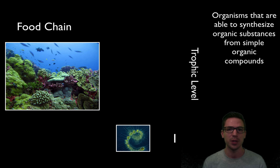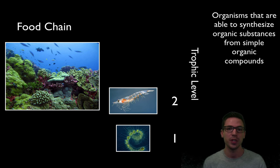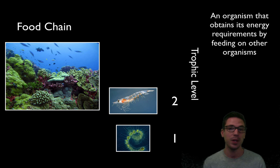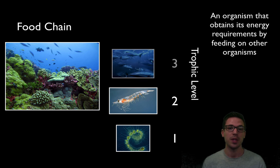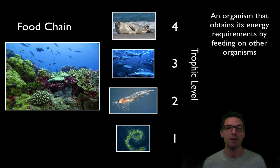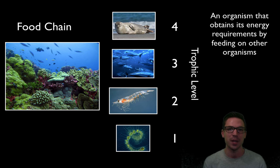Going up the food chain, producers are consumed by our second trophic level, which usually consists of smaller organisms like shrimp, krill, or zooplankton — these are our primary consumers. Consumers are organisms that obtain their energy by feeding on other organisms, since they can't make it themselves. Above them at trophic level three are secondary consumers like tuna, then tertiary consumers like seals at level four, and possibly quaternary consumers like a great white shark at level five. After about four or five trophic levels it tends to stop, because there's just not enough energy to support life further up.